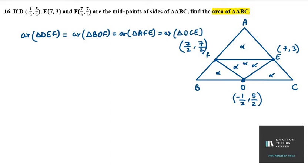So this is known. So if area of DEF equals area of BDF equals area of AFE equals area of DCE, then we can find area of triangle ABC. Area of triangle ABC has how many parts? 4 triangles. So when we have 4 equal parts, then we multiply 4 by DEF. So first we will find area of triangle DEF.